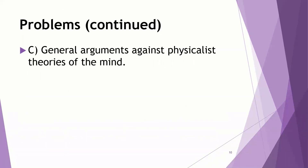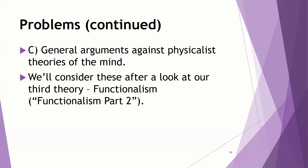There is a third concern, against physicalism broadly speaking — against both the functionalist theory and the identity theory. There are some general problems with physicalism as a whole, and we'll consider those after we look at our third theory, functionalism. You'll be able to see that in the video 'Functionalism Part Two.'